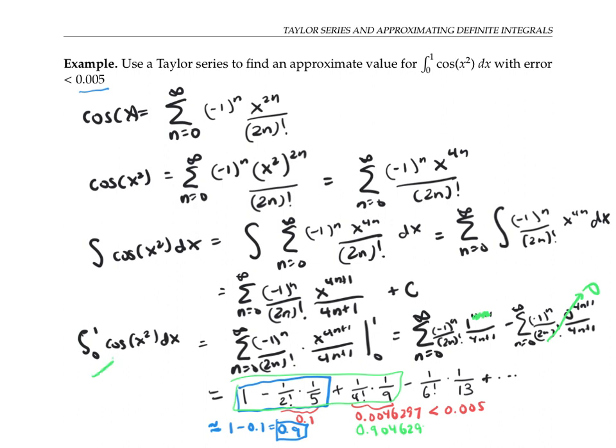The true answer, according to Wolfram Alpha, is 0.904524. So you can see I'm closer than 0.005, even after just two terms. And I'm extremely close after 3.